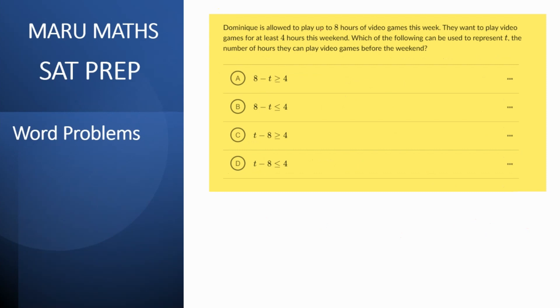Here we have Dominic is allowed to play up to eight hours of video games this week. So the total hours is eight and they want to play video games for at least four hours over the weekend. So if the number of hours he is playing over the week is t then I would say t plus four should be less than equal to eight or I can rewrite it as four is less than equal to eight minus t. So eight minus t is greater than or equal to four. So my answer would be option a.